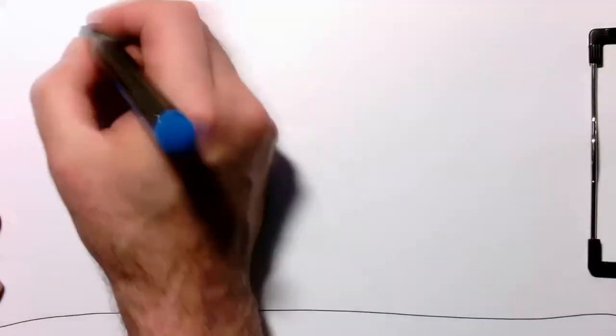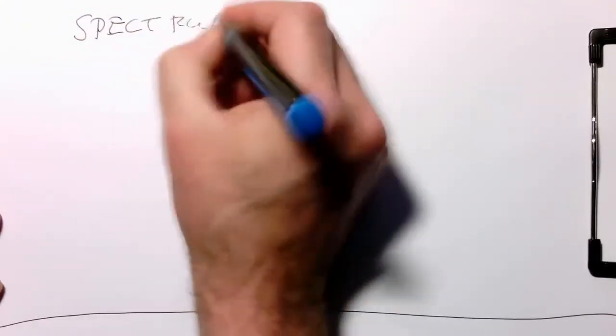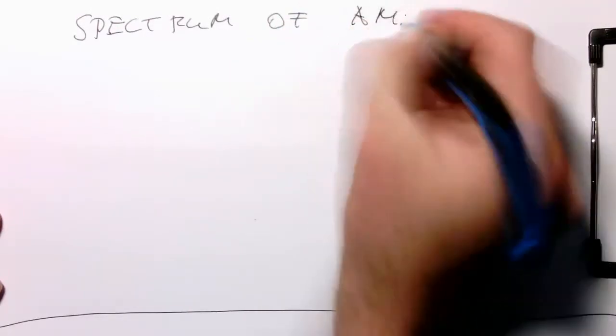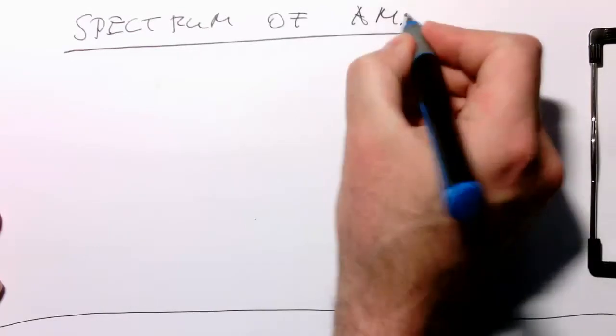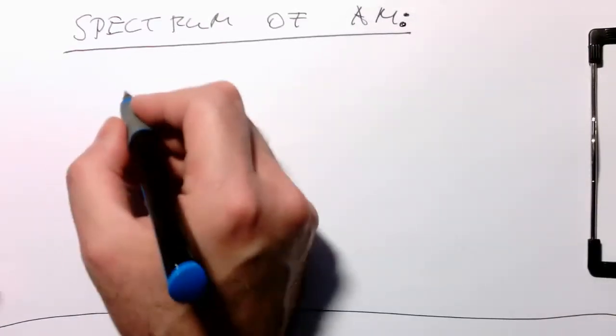Okay, let's look quickly at the spectrum of an AM signal. So spectrum of AM. So again, Octave or MATLAB comes very handy here. In this case, we just use a fast Fourier transform to look at this.